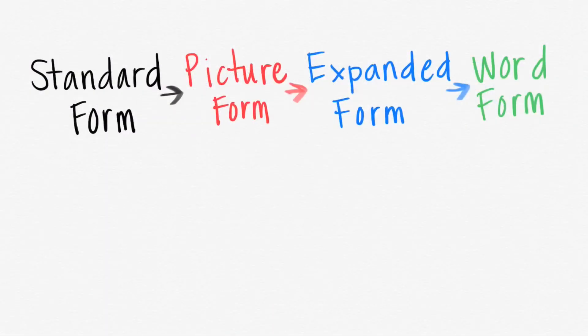Standard form simply means the regular way. So just write the number down, 347. For picture form, you simply start by drawing out the hundreds. We see that we have a three in the hundreds place, so we need 300.